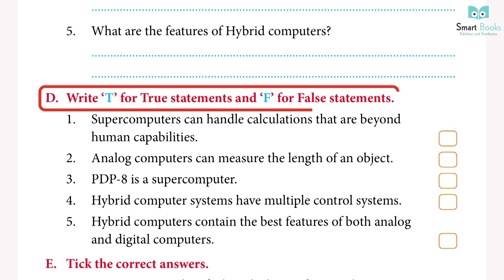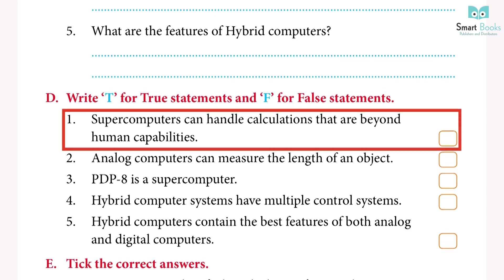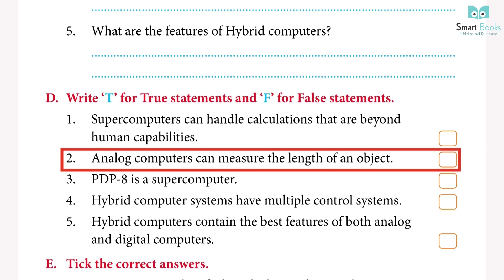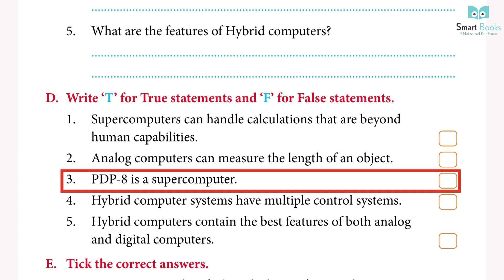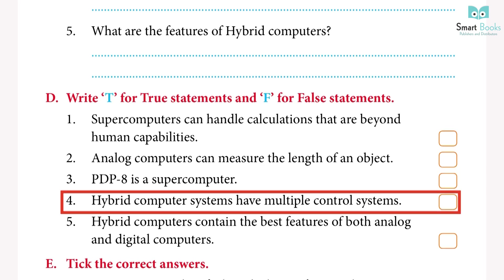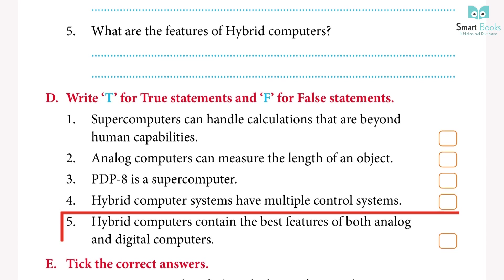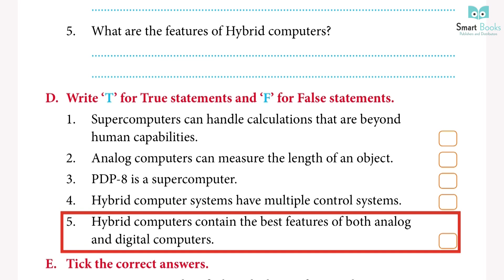Exercise D — Write T for true and F for false: 1. Supercomputers can handle calculations that are beyond human capabilities — True. 2. Analog computers can measure the length of an object — True. 3. PDP-8 is a supercomputer — False. 4. Hybrid computer systems have multiple control systems — False.